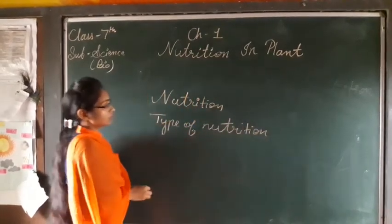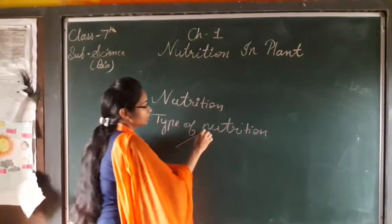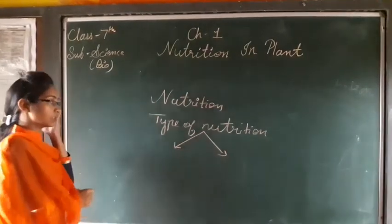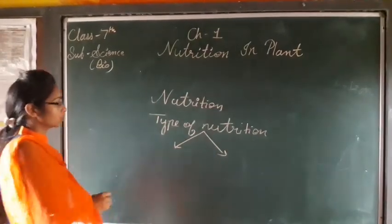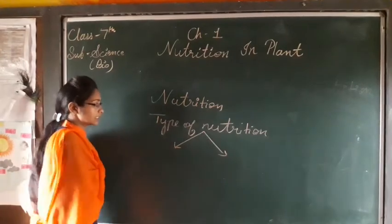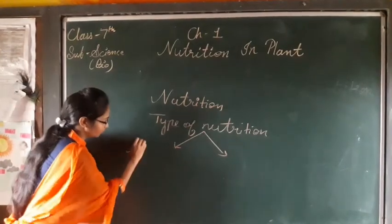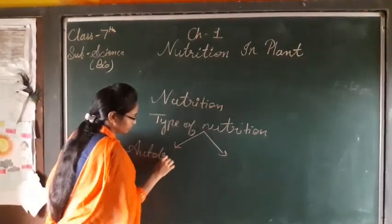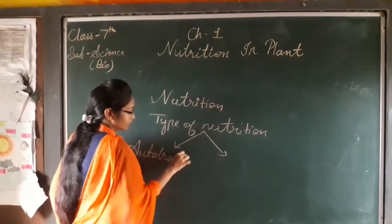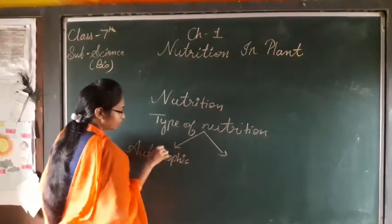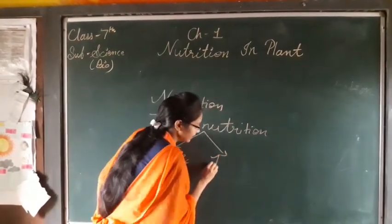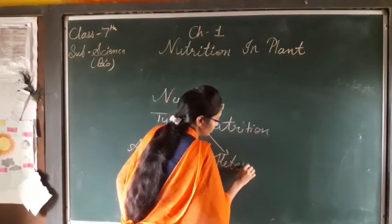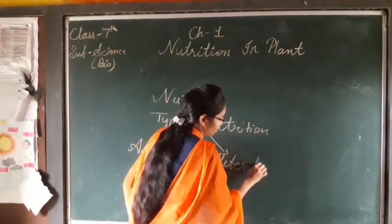According to the way organisms take food, nutrition is of two types. First is the phototrophic mode of nutrition, and second is the heterotrophic mode of nutrition.